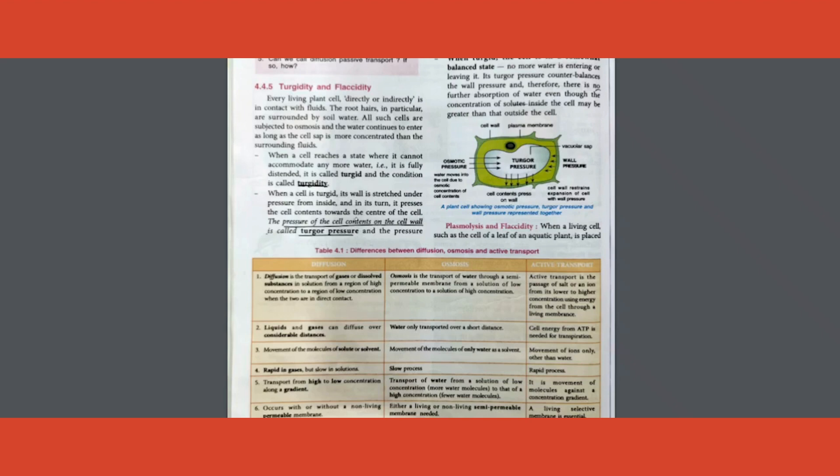Therefore, the cell contents start pushing towards the wall of the cell, and that pressure that the cell contents exert on the cell wall is called turgor pressure. If you push me, I push you back. Therefore, the wall also pushes in, tries to put the contents back. The pressure that is exerted by the cell wall on the cell content is called wall pressure. The moment turgor pressure is too much, the cell will break open.